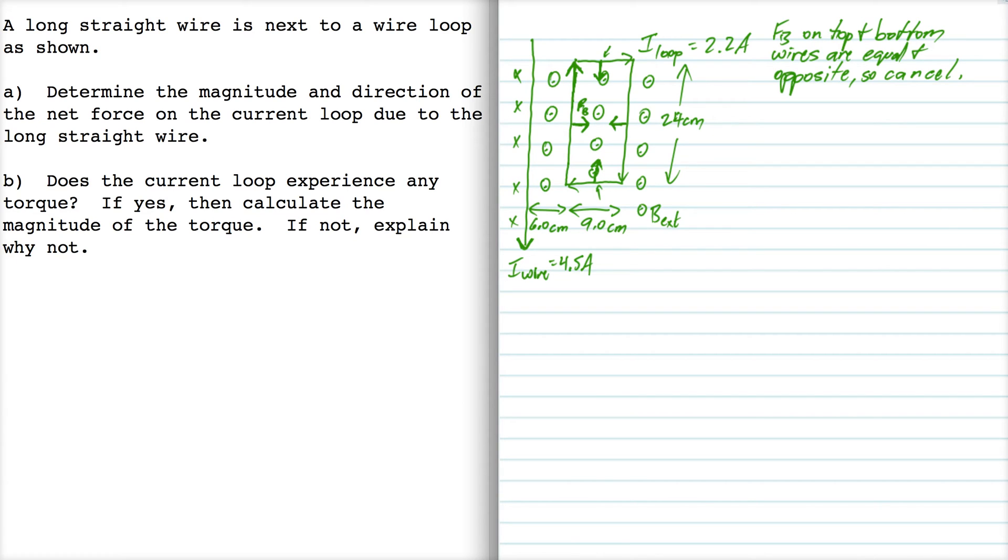All I need to worry about is the magnetic force on the left wire and the right wire. And they're going to differ because the magnetic field over here on the left wire is going to be a little bit stronger. And that means this force over here is going to be a little bit stronger. So the net force acting on this loop is going to push it away from the long straight wire. So let's consider the left wire first.